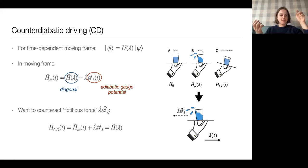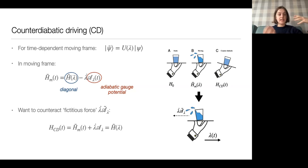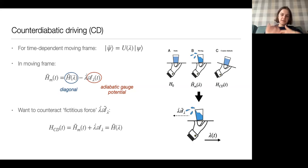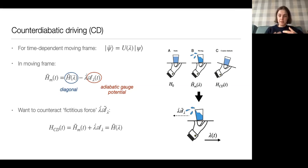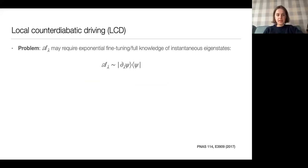A nice intuitive example: imagine you're a waiter carrying a glass from the bar to a table as fast as possible. When you accelerate, fictitious forces make the glass wobble. Your instinct is to tilt the tray to counteract these forces in whatever direction needed. This is precisely what counter-diabatic driving does — if you accelerate a system, it induces instabilities, and the counter-diabatic drive counteracts these instabilities throughout the process.